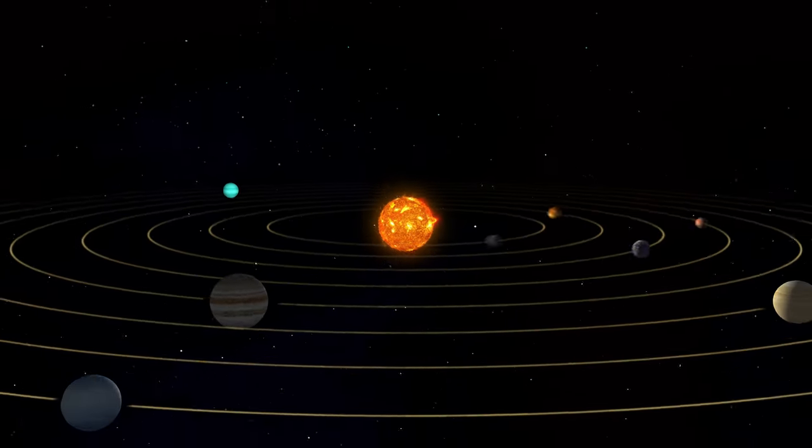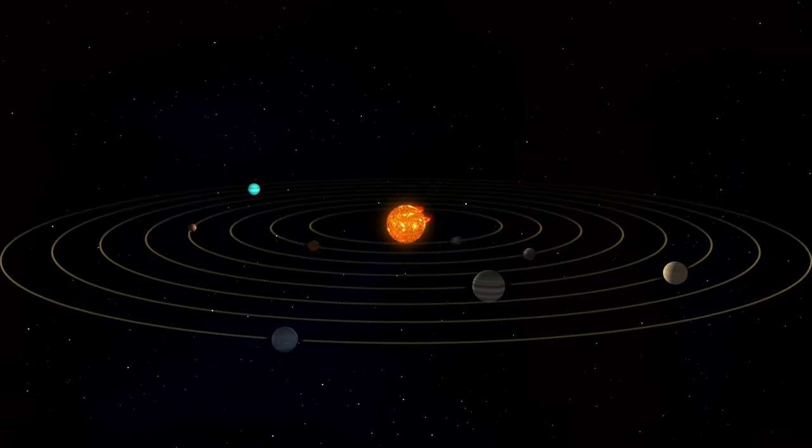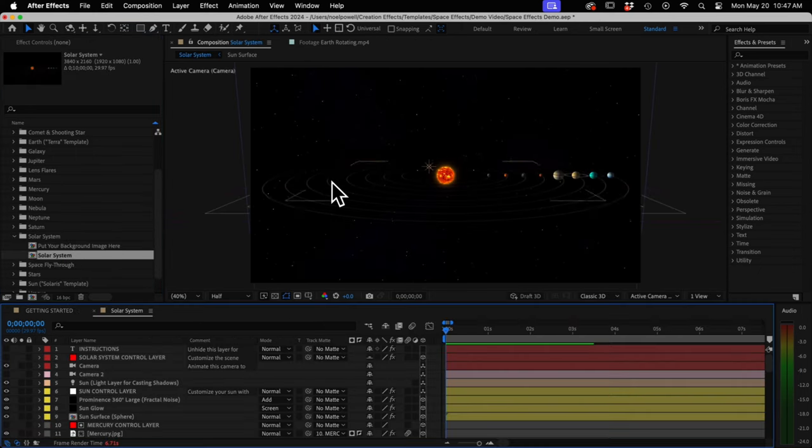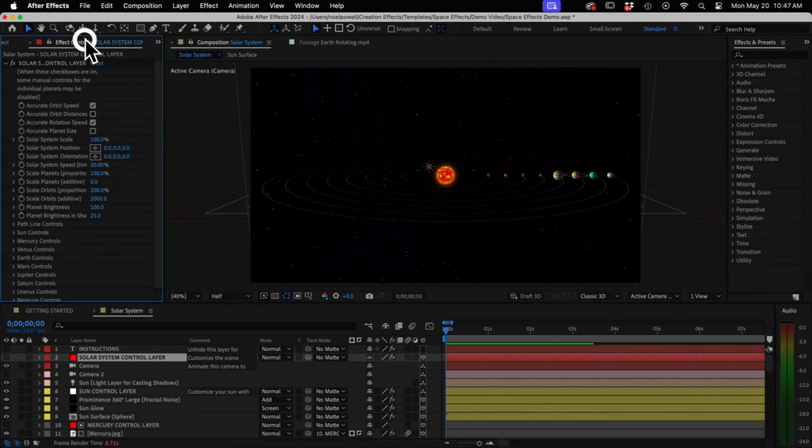For example, if you need a custom animation of the solar system for a documentary, you just open up the solar system comp, and on the control layer at the top, you've got almost 100 controls here, all organized into categories so you can quickly find what you need.